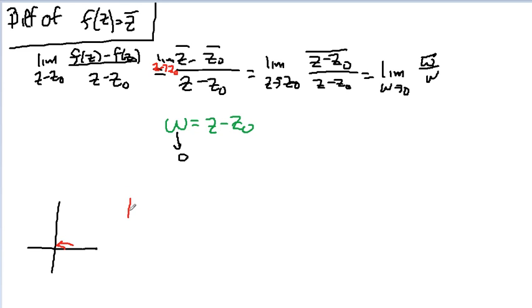If this is the case, then the limit as w goes to zero of w conjugate over w is equal to the limit as w goes to zero of, let's write this as x plus i y, except y is equal to zero here, conjugate over x plus i y, but y again is equal to zero.